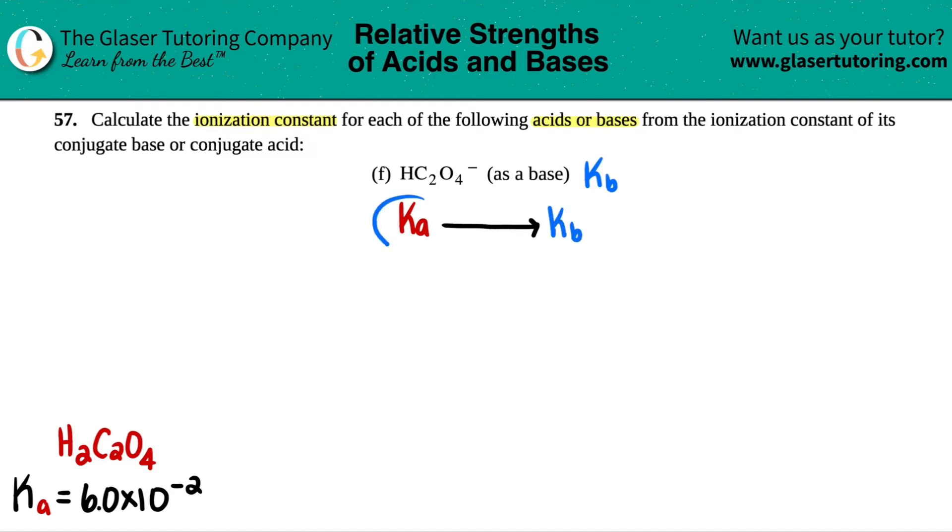There's one formula that you can convert a Ka value to a Kb value, and it's this one right here. It's your Kw formula, equals Ka times Kb. Now if we want to solve for Kb, what we would do is divide by Ka on both sides. Get rid of this.